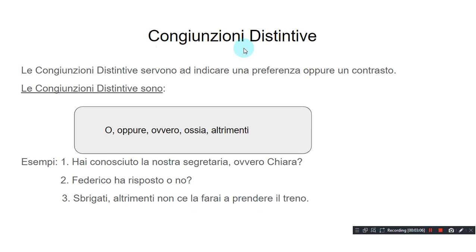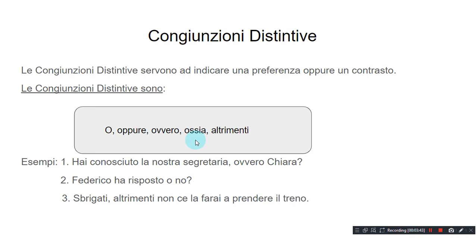Congiunzioni distintive — distinctive conjunctions. Le congiunzioni distintive servono ad indicare una preferenza oppure un contrasto. The distinctive conjunctions are used in order to indicate a preference or a contrast. Le congiunzioni distintive sono: o, 'or'; oppure, 'or / or else'; ovvero, 'namely'; ossia, 'that is / to be precise'; altrimenti, 'or else'.